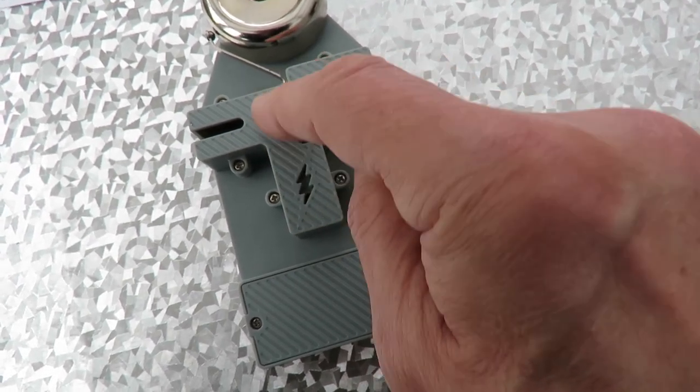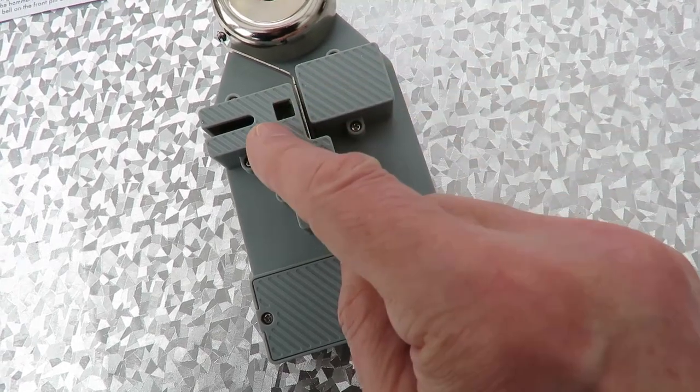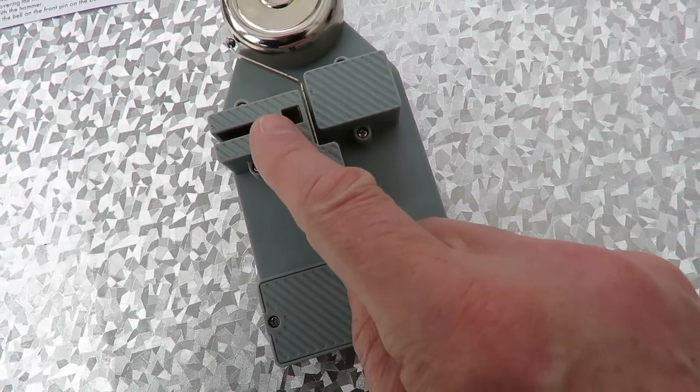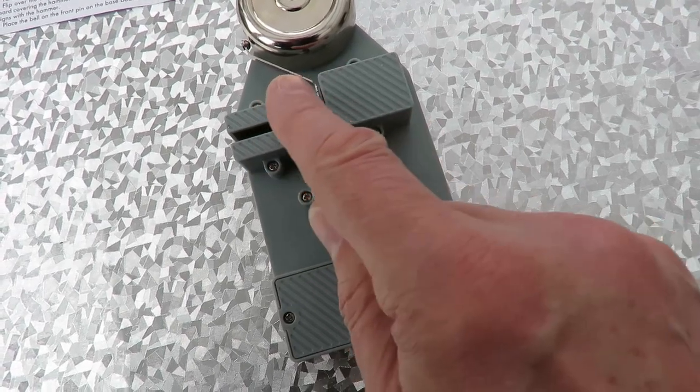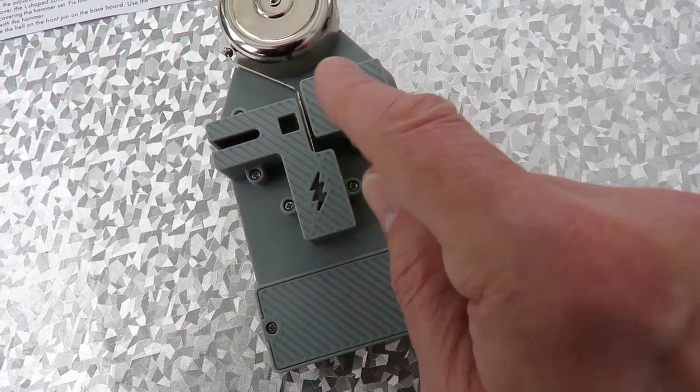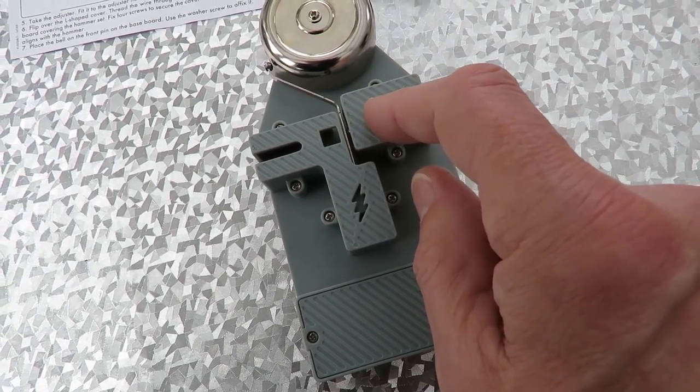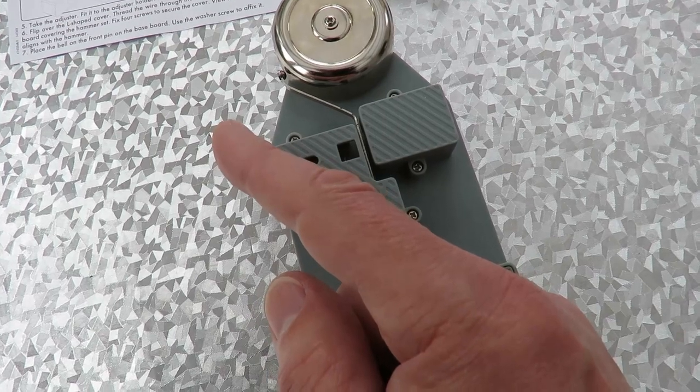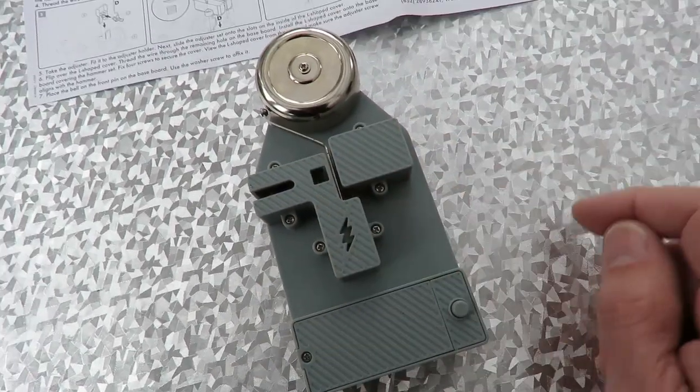So that attracts the electromagnet. Attracts the hammer to the electromagnet and it pulls the spring contact away from the connection. So that as soon as it pulls across it breaks the circuit. So the coil collapses or magnetic field collapses, springs back again, makes contact, goes forwards. Very simple circuit.